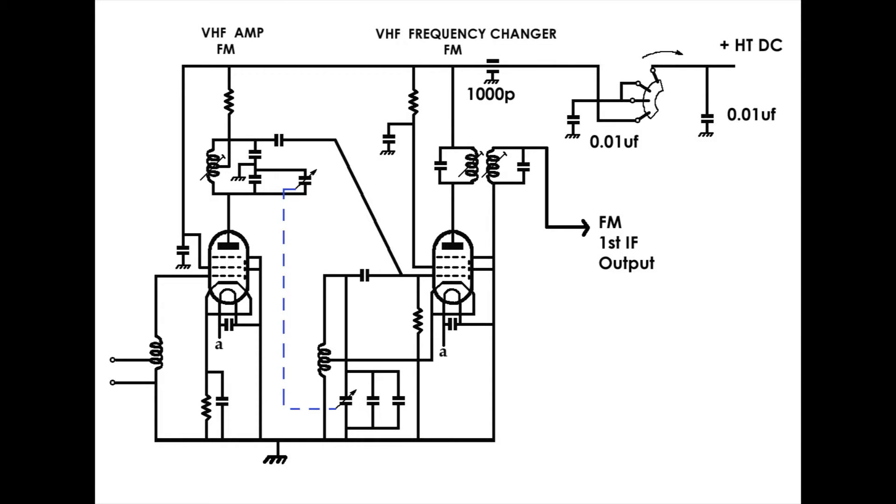What we have here are two valves that work in the first stages of the VHF section. The valve on the left amplifies the VHF radio frequency signals that come into it. The valve on the right runs as an oscillator, and it also takes in the amplified radio frequency signal from the valve on the left.